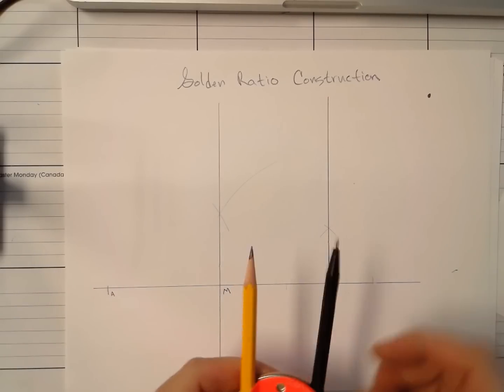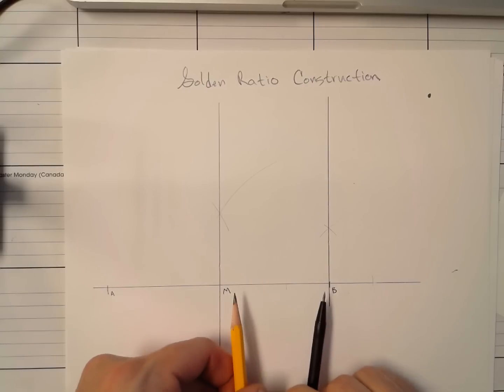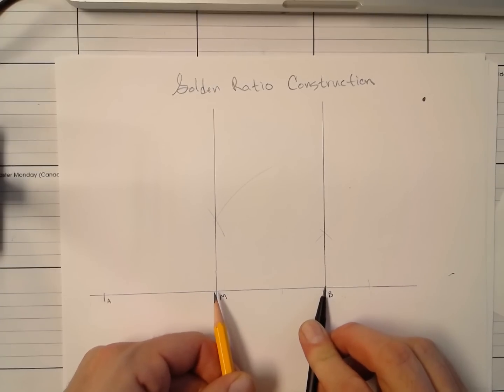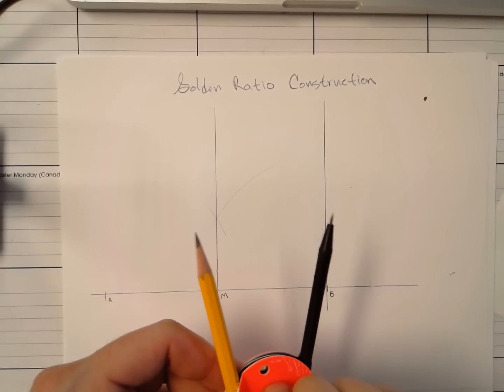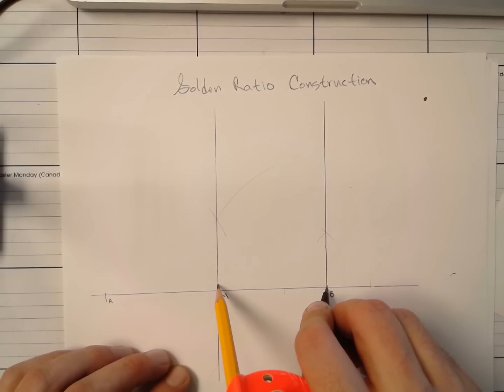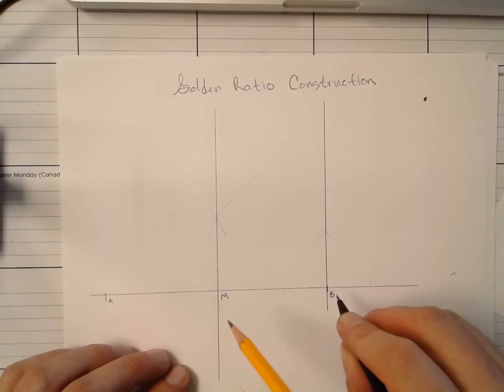Okay. Next, and this is maybe the hardest part of this whole construction. Maybe. I'm not entirely sure. We want to measure distance MB and set our compass to that distance so that the pivot point is at B, the pencil tip is exactly here at M. About like that. Tighten the compass. Sometimes it moves a little when you tighten it, so let me just double check. That's pretty good. Yeah, that's pretty good. I'm going with that.